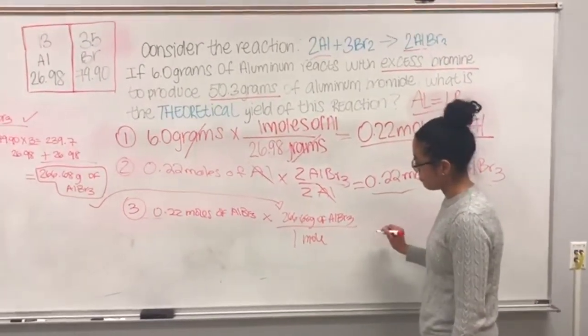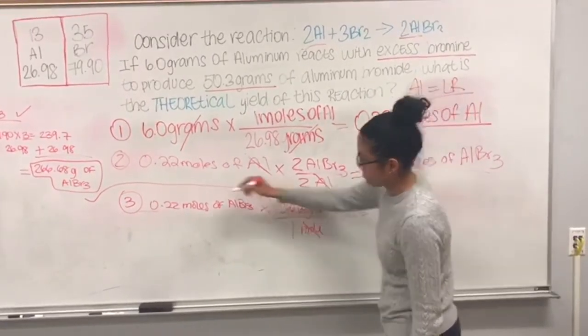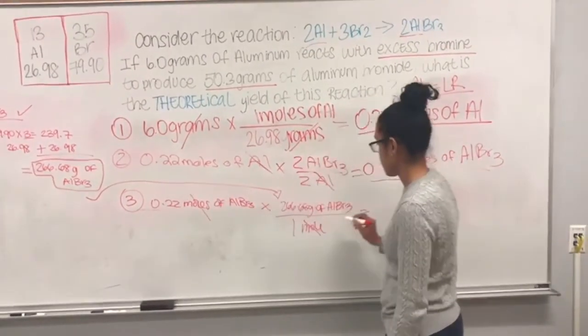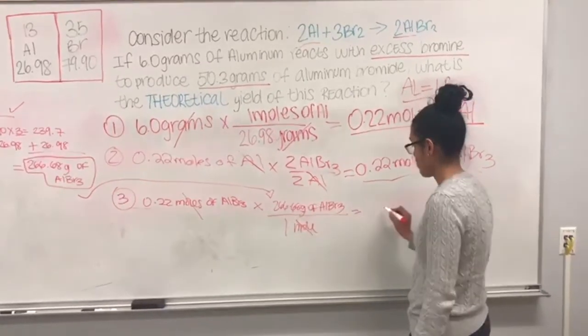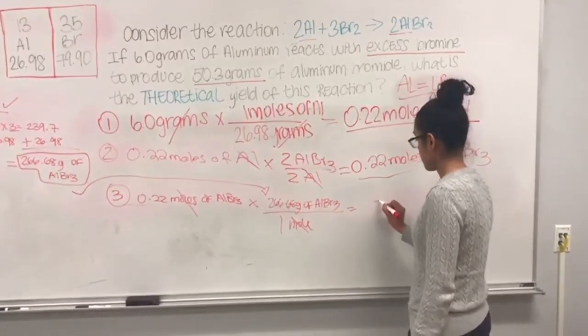By doing these calculations, we cancel out moles and stay with grams, which results in the theoretical yield of 58.7 grams.